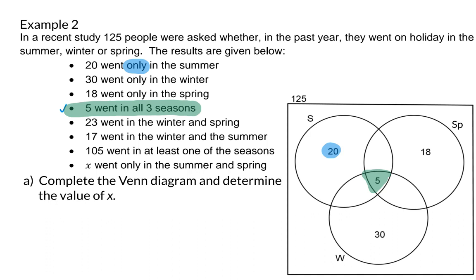The first three parts of the information have already been filled in on the Venn diagram. The next bit of information states that 23 went in the winter and spring. This time, the word only does not appear there.